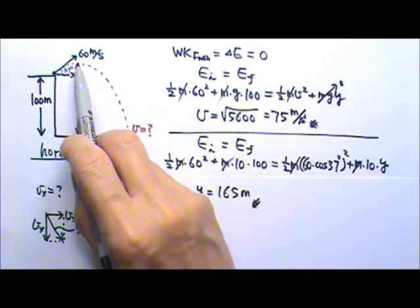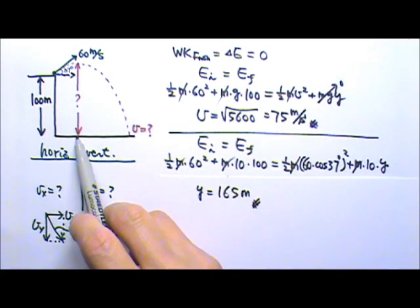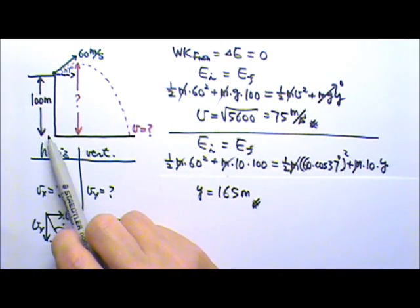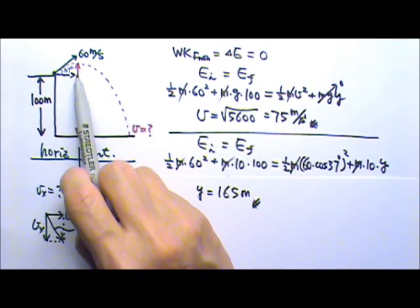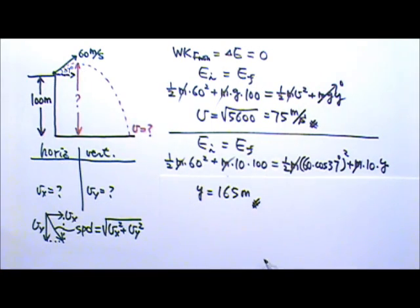And that's 165 meters above this ground right here. And since the cliff is 100 meters high, that means it's 65 meters above the top of the cliff.